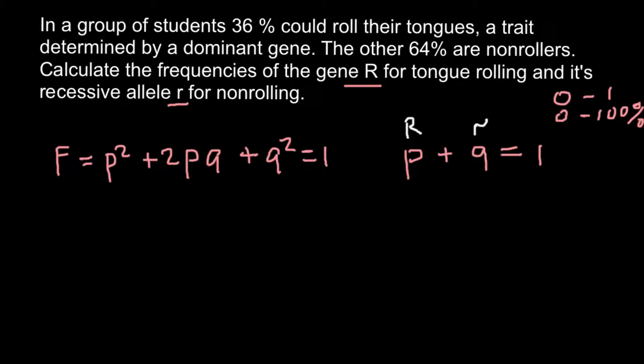So p squared would equal the genotype capital R capital R, 2pq would be capital R small r, and q squared would be the genotype small r small r.